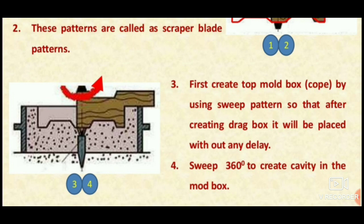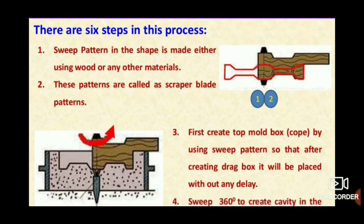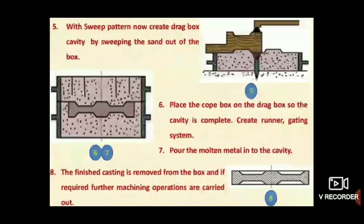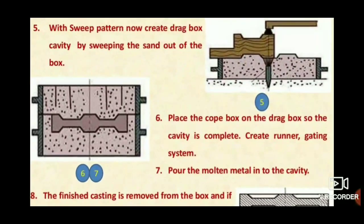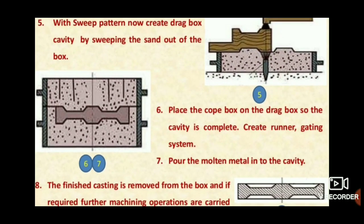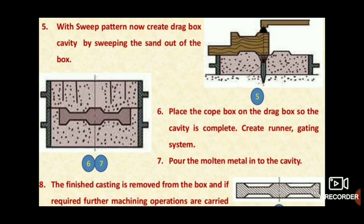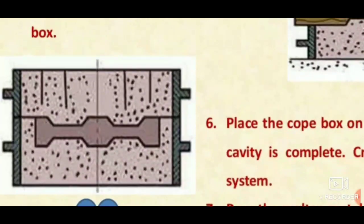First, creating a cope: the cope box is provided with sand, then the spindle rotates so that the mold cavity is obtained. This process is then repeated in the drag box.